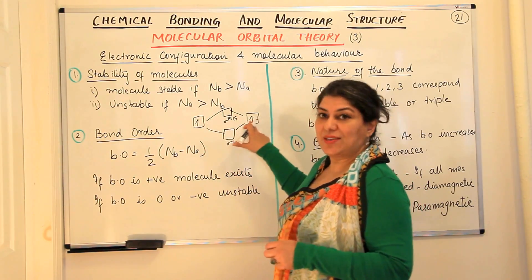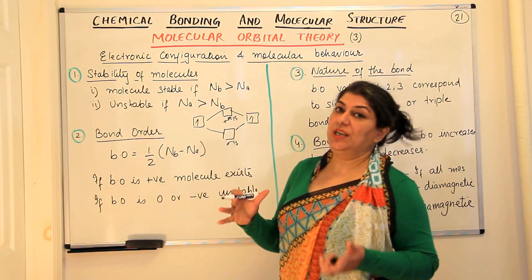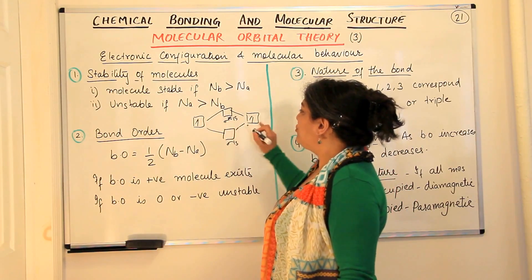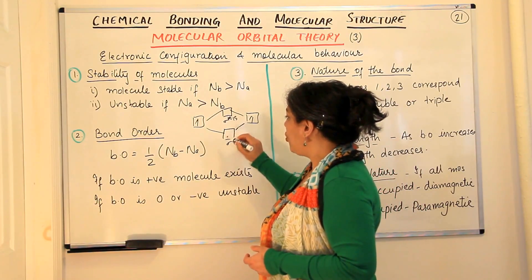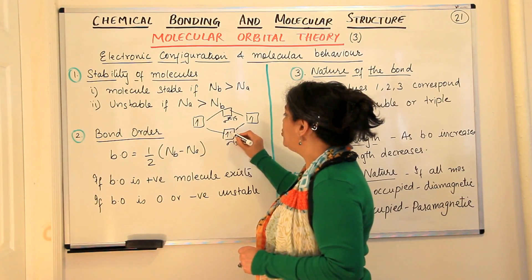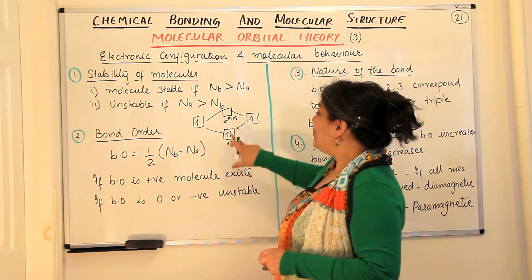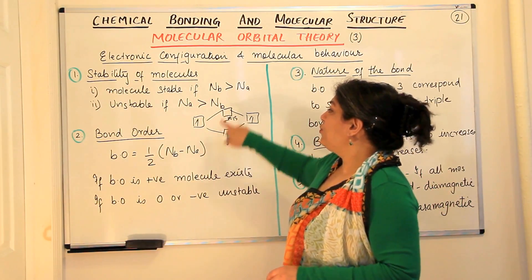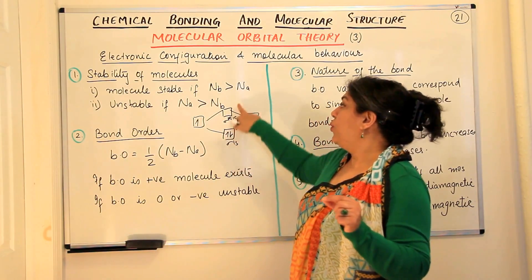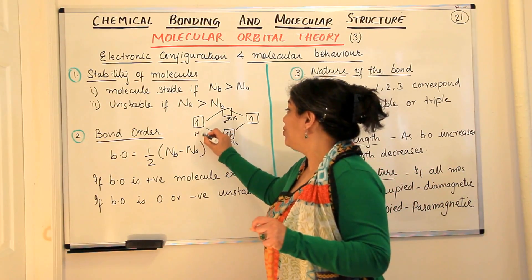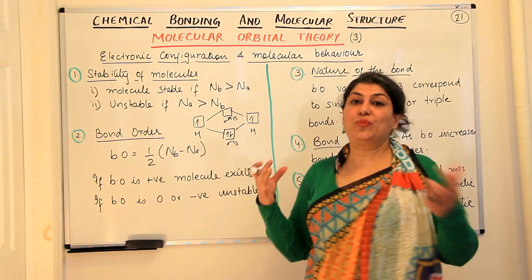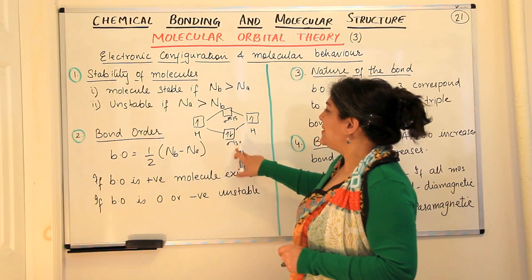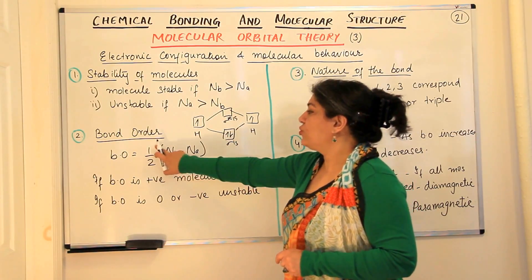The anti-bonding sigma* 1s leads to instability — its energy is greater than that of the 1s of both hydrogens — while sigma 1s has lower energy and leads to stability. With two electrons following the Aufbau principle, they first occupy the lowest energy orbital, sigma 1s. So both electrons are in bonding, and anti-bonding has zero electrons. Therefore, Nb = 2 and Na = 0. Bond order = ½(2 − 0) = 1.